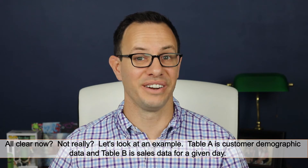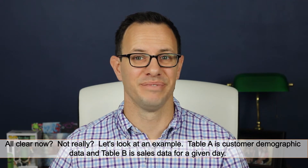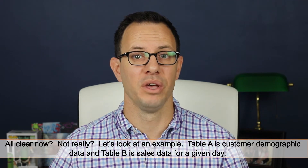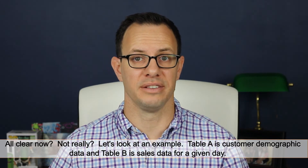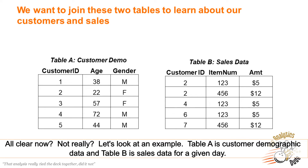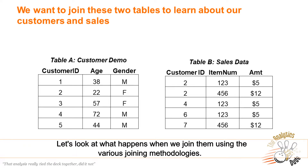All clear now? No? Not really? Okay, well, let's look at an example. Table A is customer demographics. Table B is sales on a given day. Let's look at what happens when we join them using the various joining methodologies.